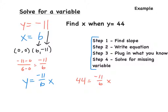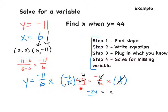Now we just have a one-step equation. We multiply both sides by the reciprocal, negative 6 over 11. These cancel out, and all we're left with on the left is x. We write 44 as 44 over 1. The greatest common factor of 11 and 44 is 11, so this simplifies: negative 6 times 4 equals negative 24, and 1 times 1 equals 1. So x equals negative 24, and this is our final answer.